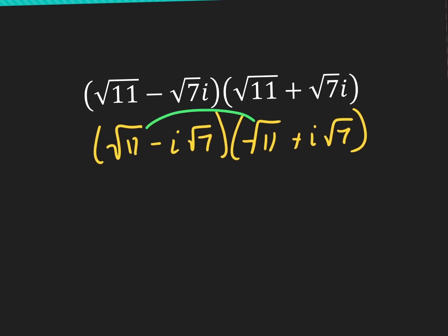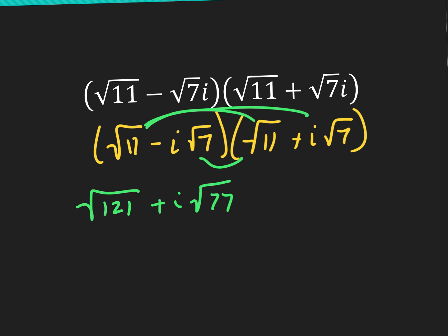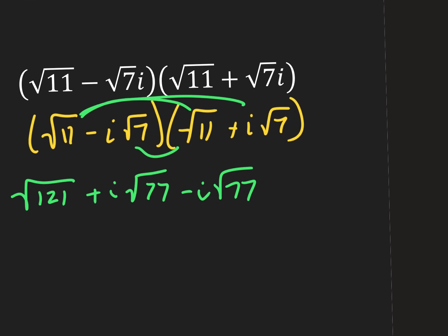I have the square root of 11 times the square root of 11 — that's the square root of 121, which is 11. Then I have the square root of 11 times i root 7, so it's going to be plus i square root of 77. Then I have negative i root 7 times the square root of 11, so minus i square root 77. And then negative i times negative i gives me negative i squared times the square root of 49. 7 times 7 is 49.